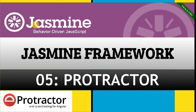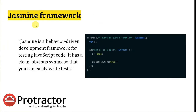Jasmine is a behavior-driven development framework for testing JavaScript code. Whenever you want to test JavaScript code and you want to use a framework, Jasmine, Mocha, and Cucumber are some of the options available. Jasmine is the default framework available for Protractor, so whenever you start writing Protractor scripts you will use Jasmine, though it's not strictly mandatory.